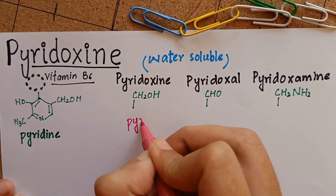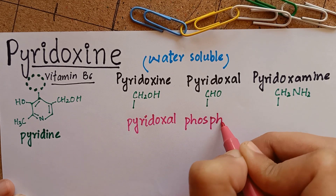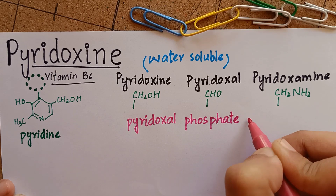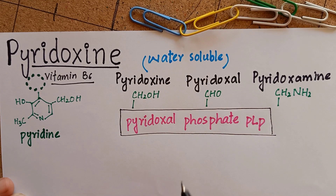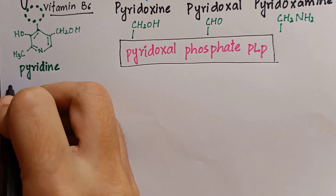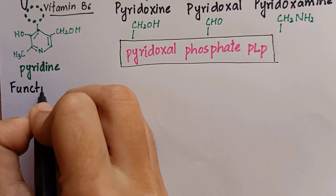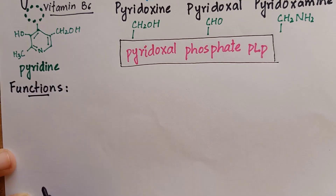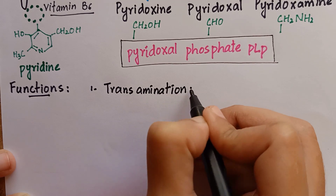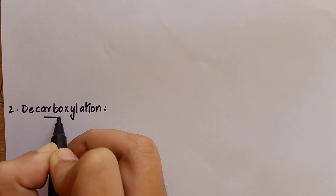The active form of vitamin B6 is the coenzyme pyridoxal phosphate. All three compounds can serve as precursors of this active coenzyme form. The biochemical function of vitamin B6 is that it participates as a coenzyme in reactions involving amino acids, for example, transamination, decarboxylation, condensation, and de-amination.